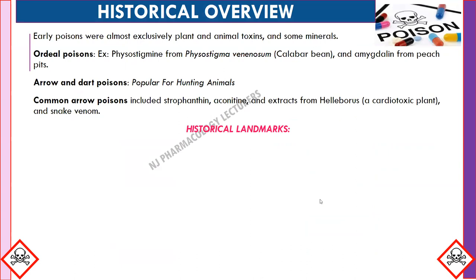Looking at the historical overview, the history of poison and poisoning dates back several thousand years. In olden days, early poisons were made exclusively from plant and animal sources and sometimes minerals. These toxins were used for hunting. Ordeal poison was administered to persons accused of witchcraft and other crimes — examples include physostigmine from Physostigma venenosum (also known as calabar beans) and amygdalin from peach pits.